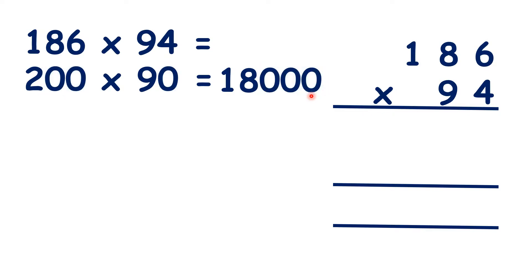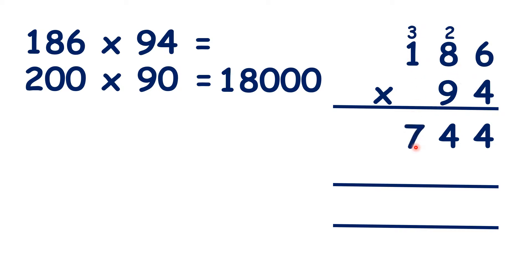So now we can work out 186 times 94, and we know that our answer should be something close to 18,000. So 6 times 4 is 24. 8 times 4 is 32, plus 2 is 34, and 1 times 4 is 4, plus 3 is 7.